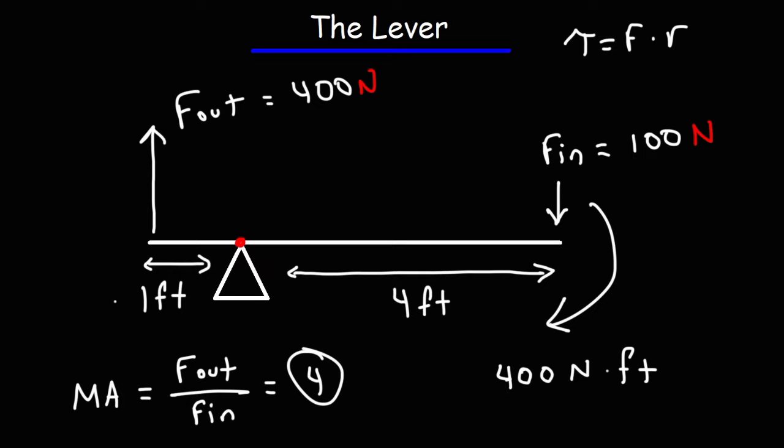If we calculate the torque on the other side of the fulcrum, on the left side, it's going to be the output force of 400 times 1 foot, which is 400 newton-feet. So the torque is the same on both sides.